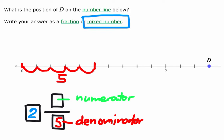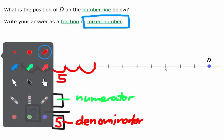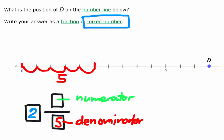To look for the numerator, we can look at the distance of D from 2. Counting the number of small spaces between 2 and D, we have 1, 2, 3. 3 spaces from 2 to D. And that actually represents the numerator of the fraction.